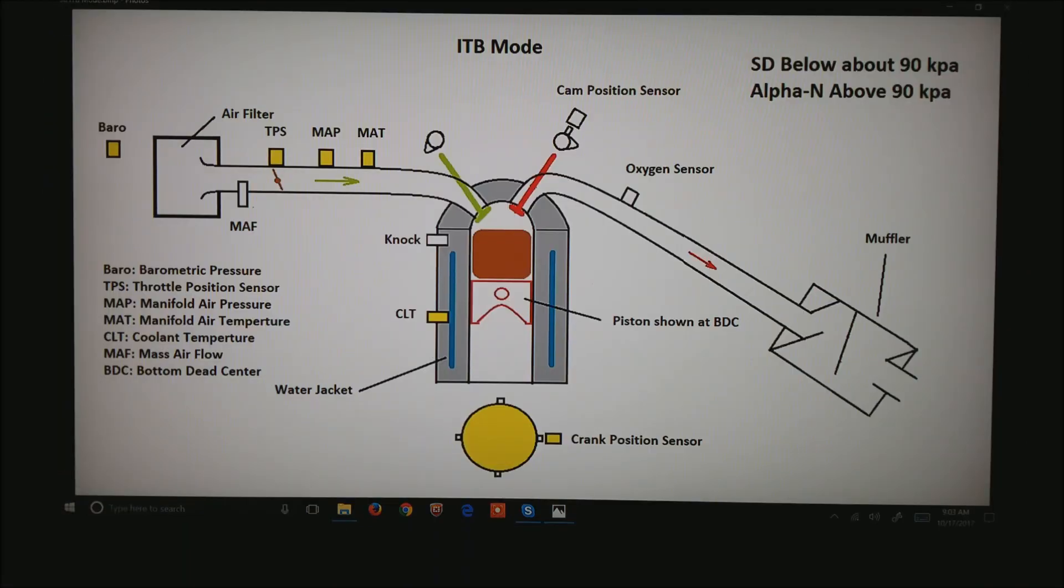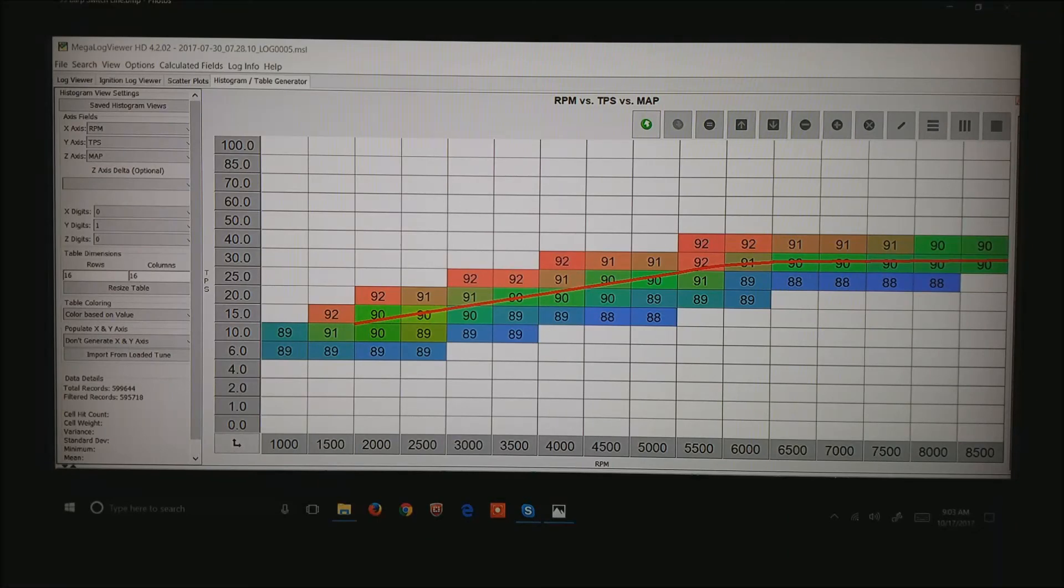So now, remember our ITP mode. Let's look at that a little closer. What I've done is created a filter that basically just says, show me only data when I'm real close to 90 kPa. It's this curve we use to define the system in ITP mode to convert or change over from speed density at low power below the red curve to alpha n essentially on the top half of the curve.